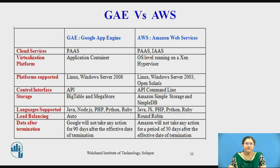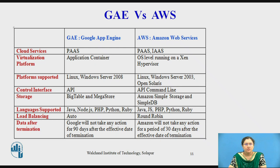We will now see the differences between Google App Engine and Amazon Web Services. In terms of cloud services, GAE focuses on PaaS, while AWS covers PaaS and IaaS. The virtualization platform in GAE is an application container; in AWS it is OS-level running on a Xen hypervisor. Platforms supported: GAE supports Linux and Windows Server 2008; Amazon supports Linux, Windows Server 2003, and OpenSolaris. The control interface for GAE is an API; for AWS it is an API and command line. For storage, GAE uses Bigtable and Megastore; Amazon uses Simple Storage and SimpleDB.